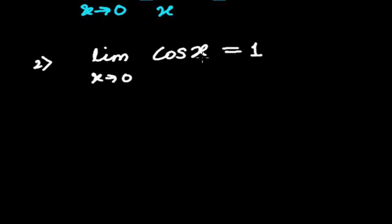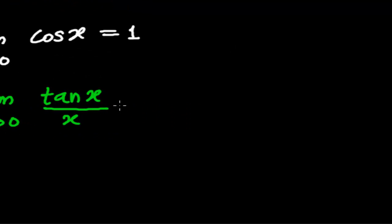Simply, when x tends to 0, x here is the angle of the trigonometric function. Another third one: limit when x tends to 0, tan x whole divided by x is equal to 1. So, these are the three basic formulas that we should know. These are so important.